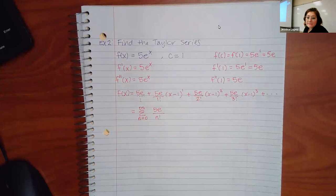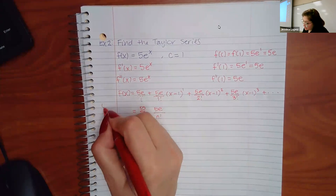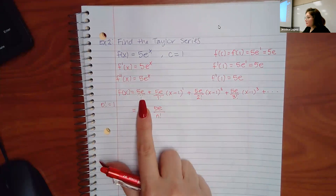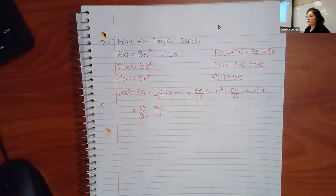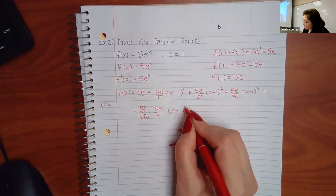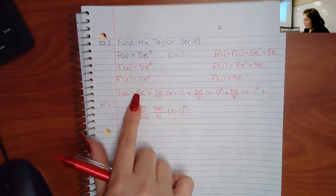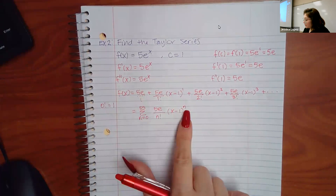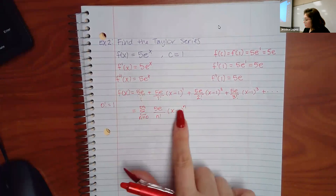Zero factorial is defined as 1. Depending on your book, some write 0 factorial explicitly and some don't because they know it equals 1. For the x part, (x−1)^n: when n=0 there's no (x−1) factor in the first term; when n=1, 2, 3 you get those corresponding terms.